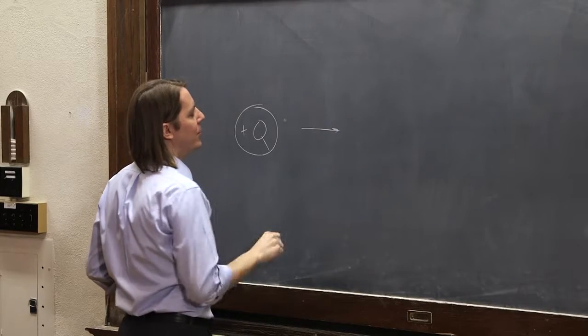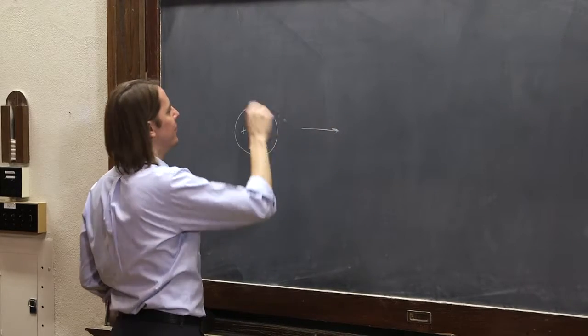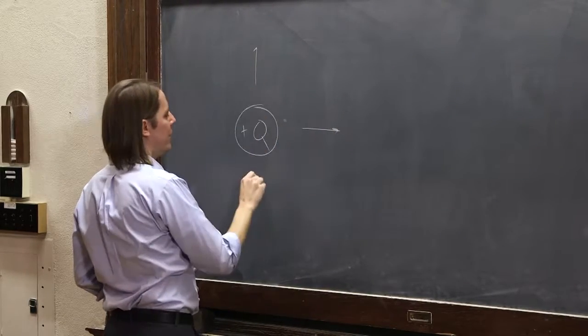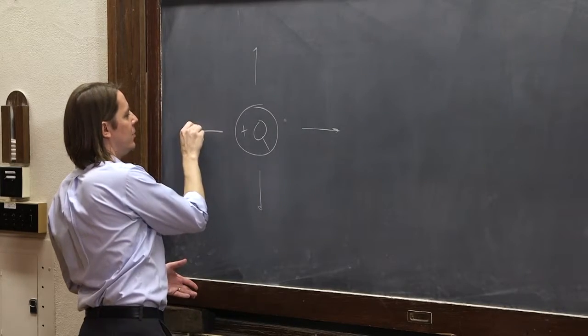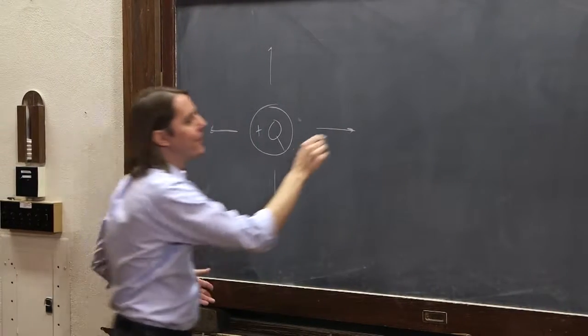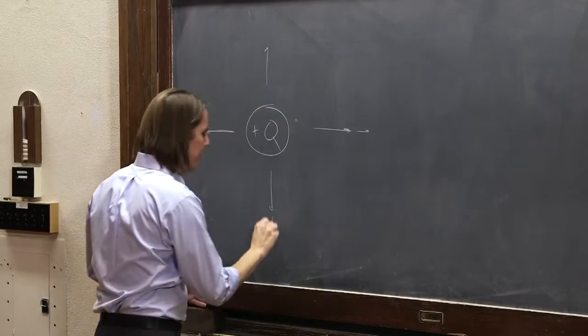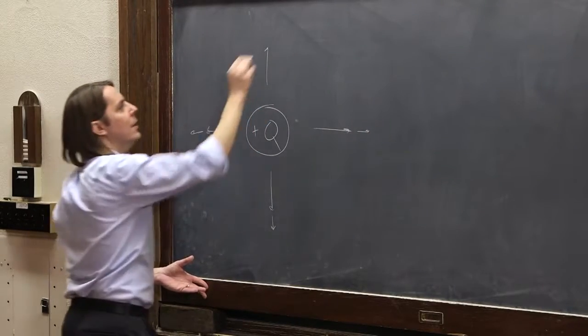If we're here, then we draw a vector like that, because a positive test charge would fly away. If we're here, we draw one like that. If we're here, we draw one like that. Draw one like that. And as you get farther away, the field gets smaller. So we might draw it like this farther away.